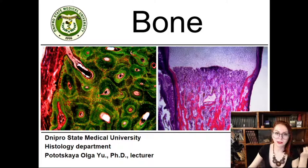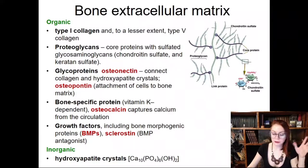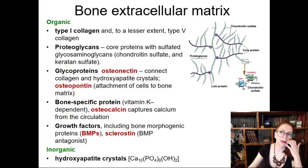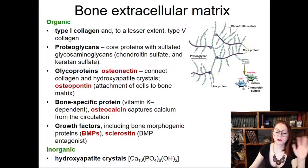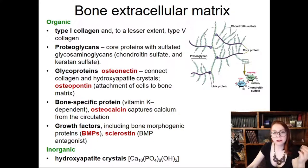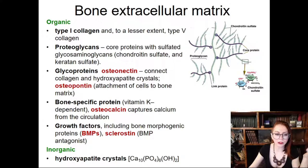Today we continue the topic of skeletal connective tissues, and in detail we are going to talk about bone tissue. We'll start from the most difficult aspect: the composition of the extracellular matrix. Skeletal connective tissues are part of connective tissues, which are characterized by a very well-developed extracellular matrix. In bones, the extracellular matrix is extremely stiff, helping bone to support and protect our organs and provide proper locomotion.